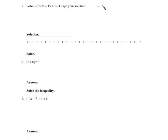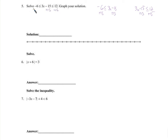Remember this is two inequalities — this inequality and at the same time, this inequality. If we were to solve these independently, we'd do the same thing on both sides. With the variable expression sandwiched in the middle, we treat it like two inequalities. We add 15 to both sides of both inequalities: 9 is less than or equal to 3x is less than or equal to 27. Divide everything by 3: 3 is less than or equal to x, which is less than or equal to 9.